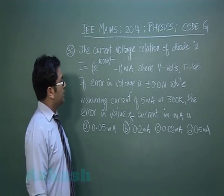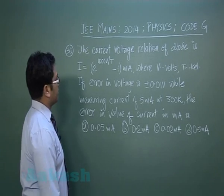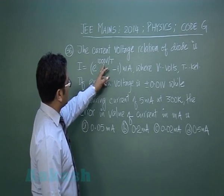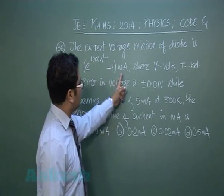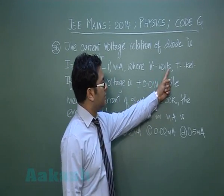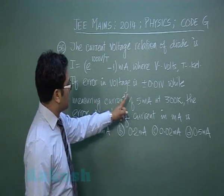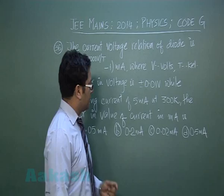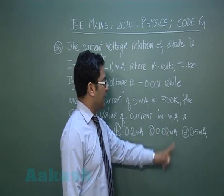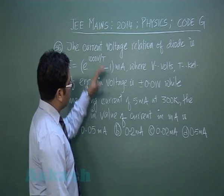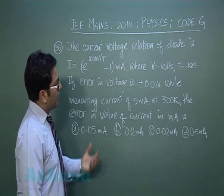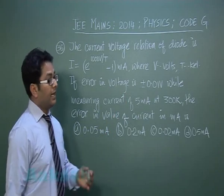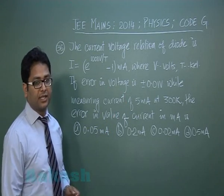Question number 36 is from error and measurement. The current-voltage relation of a diode is given as I = e^(1000V/T) − 1 milliampere, where voltage is in volts and temperature in Kelvin. The error in voltage is ±0.01 V while measuring a current of 5 mA at 300 K. We need to find the error in the value of current in milliampere. The error in temperature is nil or negligibly small, so the question doesn't provide an error for temperature.